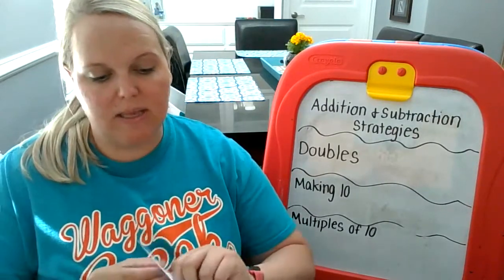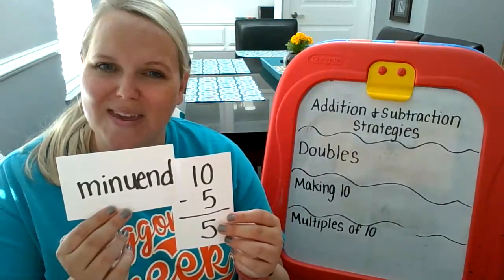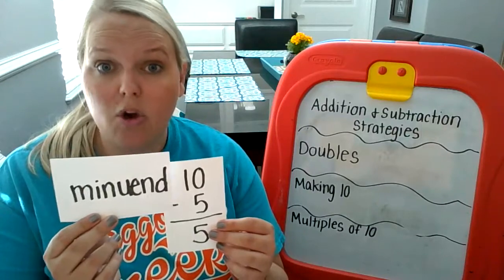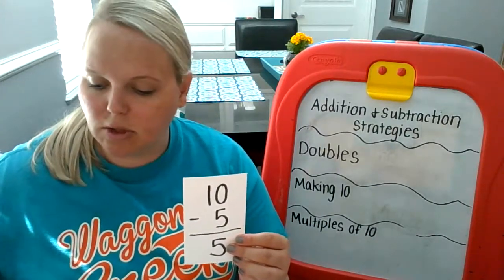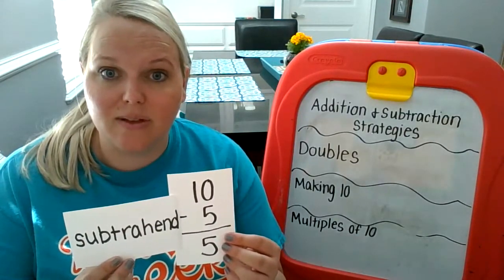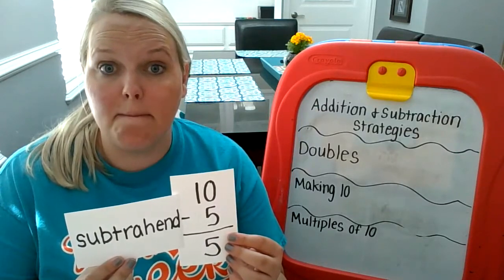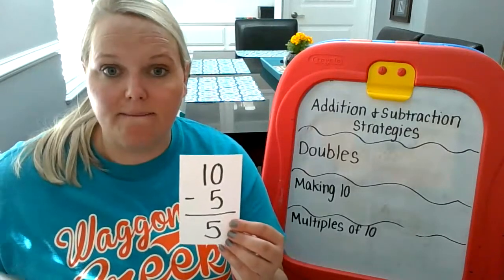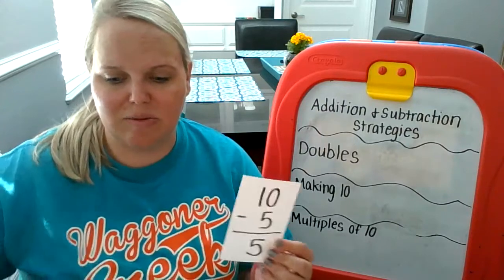When I'm subtracting, remember our Big Daddy goes first. That Big Daddy is called the minuend. The minuend is the top number or the first number and it's going to be the bigger number. When we're subtracting, we're taking away from the minuend. The number that we're taking away is called the subtrahend. The subtrahend is taken away from the minuend, which is the top number. And when we do that, we find the difference. The difference is the answer when we subtract.